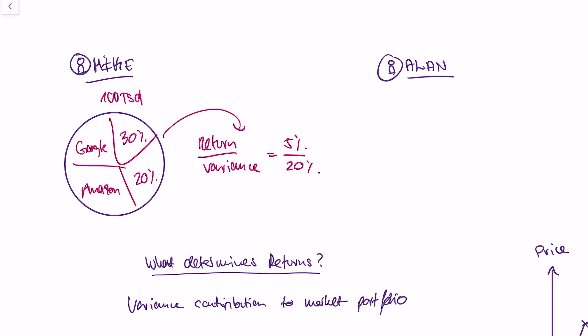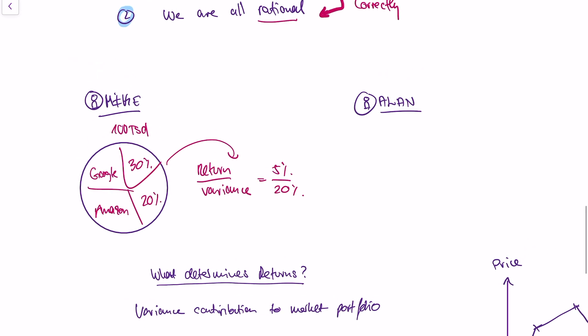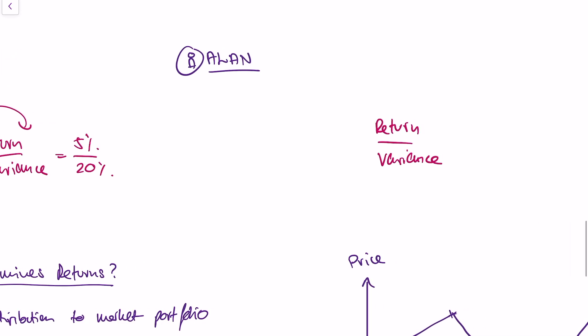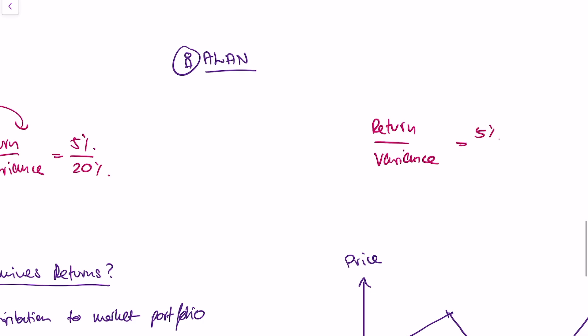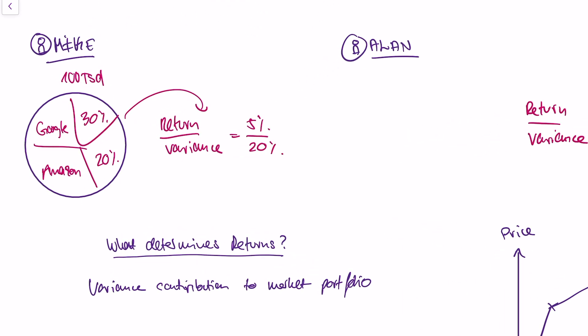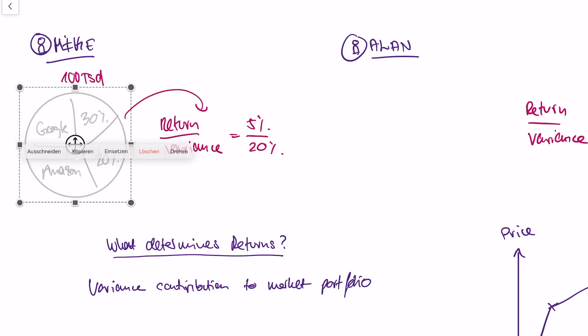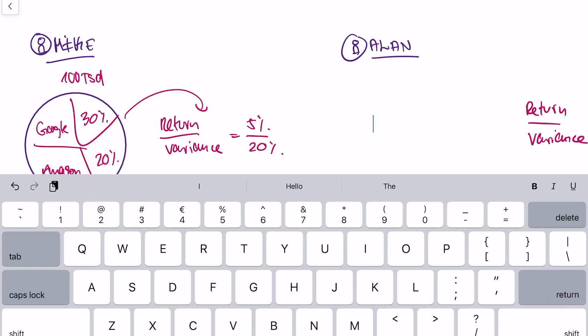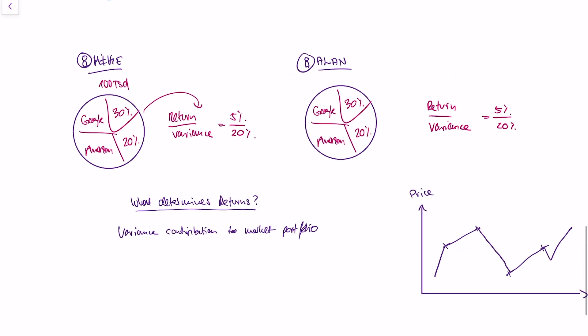What will Alan do? Alan has the same assets available in the market as Mike, and he is also smart and will optimize return over variance. We know the optimal return over variance ratio is 5% divided by 20%, and we know which portfolio achieves this — exactly the portfolio Mike has chosen. So Alan will invest into the same portfolio.